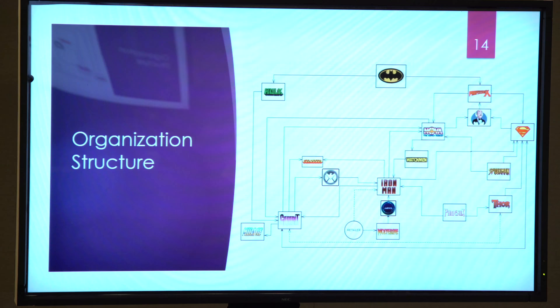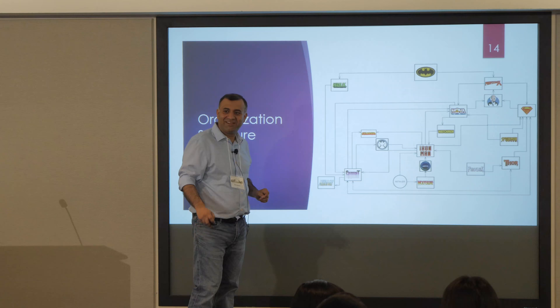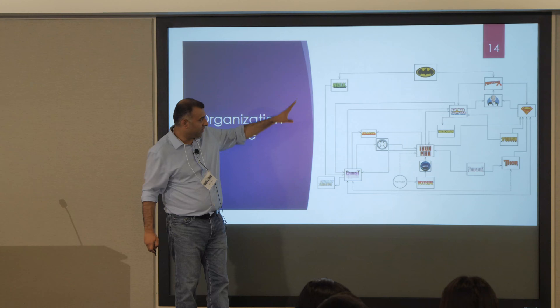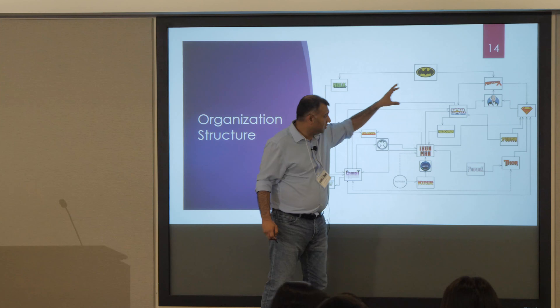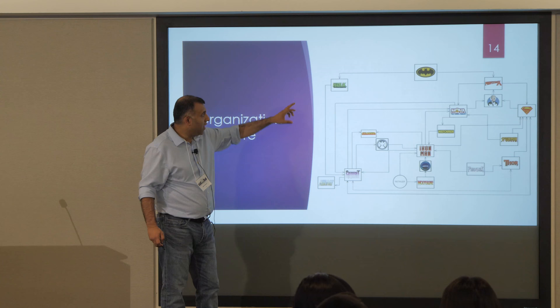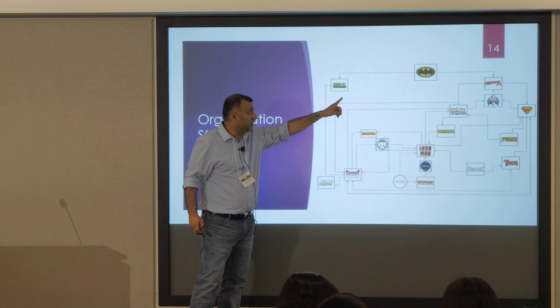Our org structure names teams as superheroes — Batman, Prophix, Marvel, Forge, and others. To give you an idea of data flow: Prophix is search, another team handles inventory, Superman handles pricing. Each team owns a bunch of services — not just one. You could have 20 or 30 services per team.